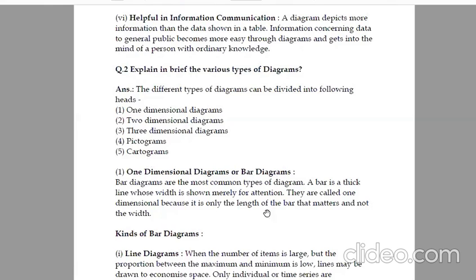One-dimensional diagrams or bar diagrams. Bar diagrams are the most common types of diagrams. A bar is a thick line whose width is shown merely for attention. They are called one-dimensional because it is only the length of the bar that matters and the width does not matter. It only considers length, so it is called one-dimensional.